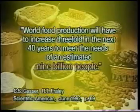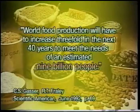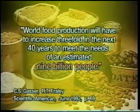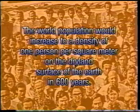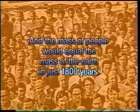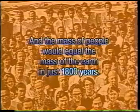To grasp what that means, think of food. Scientific American reported that world food production will have to increase threefold in the next 40 years to meet the needs of an estimated nine billion people. If this modest 1.7 percent per year continued unchanged, the world population would grow to a density of one person per square meter on the dry land surface of the earth in just 600 years, and the mass of people would equal the mass of the earth in just 1,800 years.